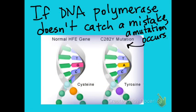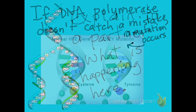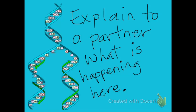If DNA polymerase does not catch a mistake, a mutation occurs, which is a change in the DNA. Explain to a partner what is happening here. Describe the process of DNA replication.